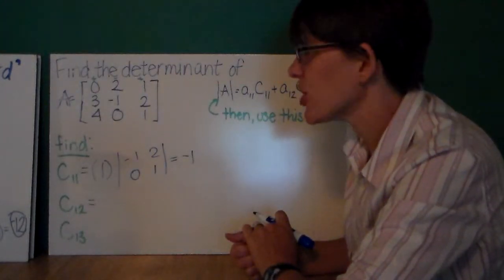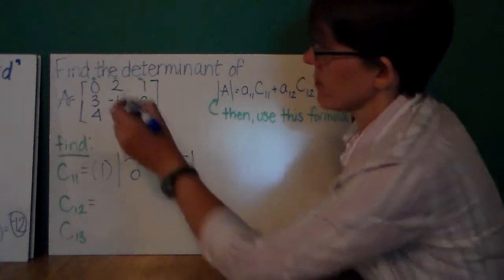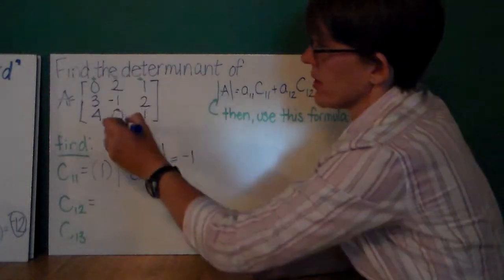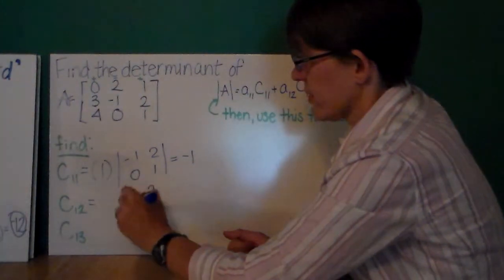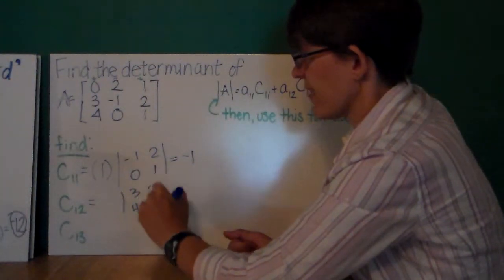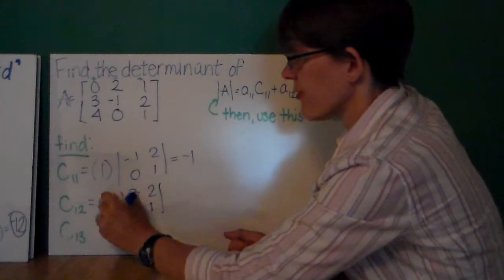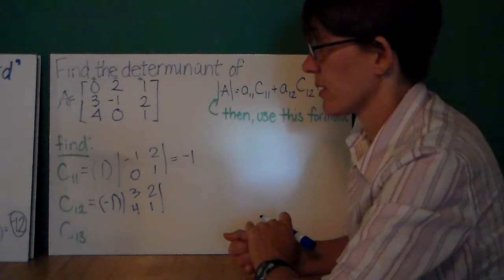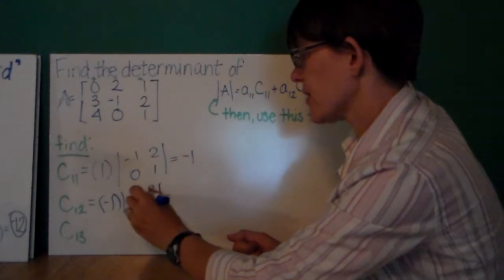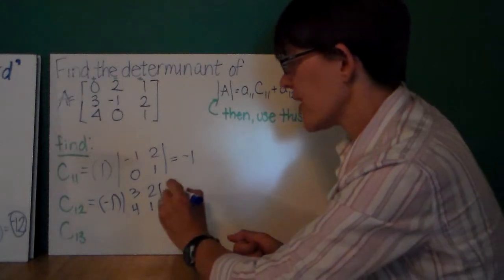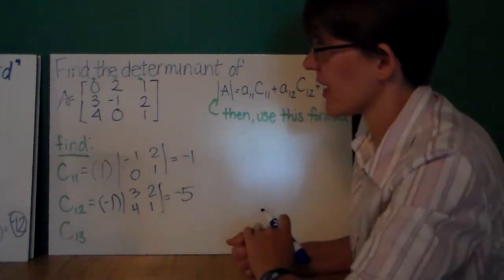Then, I'm going to find my cofactor for row 1, column 2. Crossing out, crossing out, I get 3, 2, 4, 1. I'm going to factor. And, this is going to be negative 1. So, this is 8 minus 3 is 5, times negative 1 is negative 5.